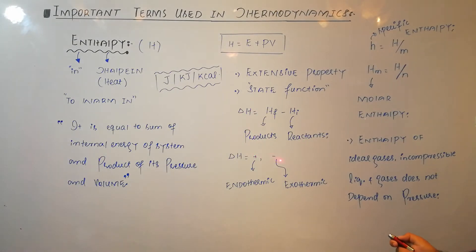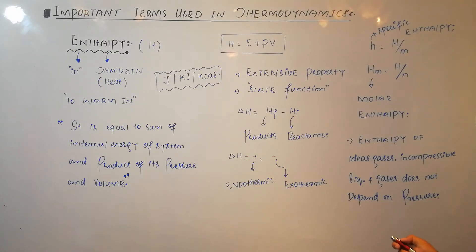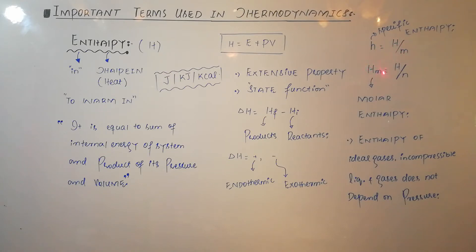Delta H may be positive or negative. If positive, the reaction is endothermic; if negative, the reaction is exothermic. There is also specific enthalpy, which is enthalpy divided by mass, and molar enthalpy, which is enthalpy divided by number of moles. Units for specific enthalpy are joules or kilojoules or kilocalories per gram, and for molar enthalpy, per mole.